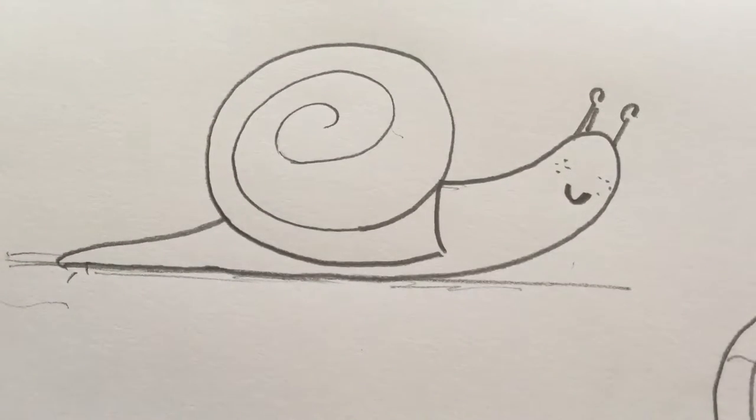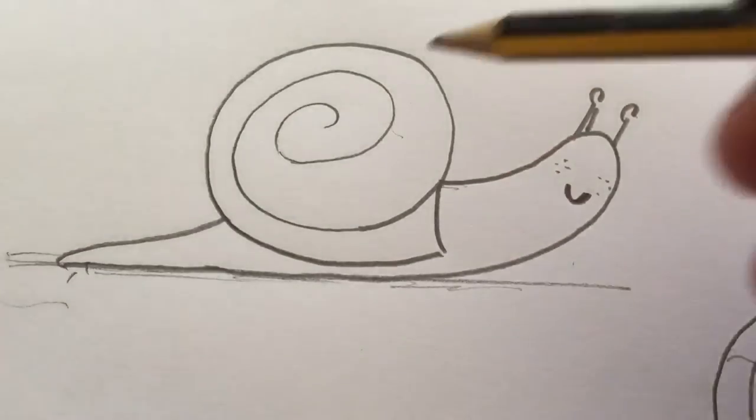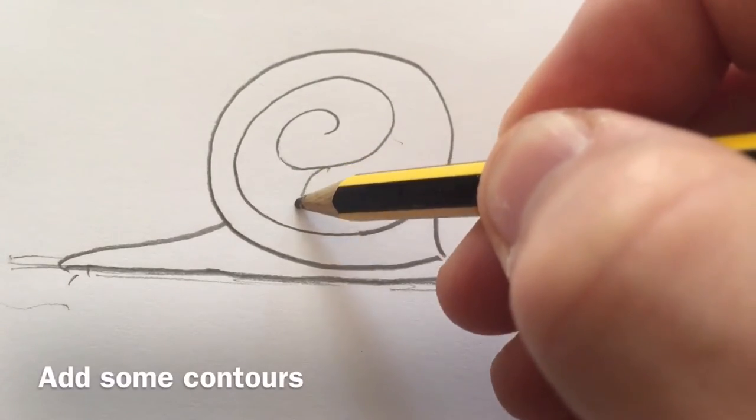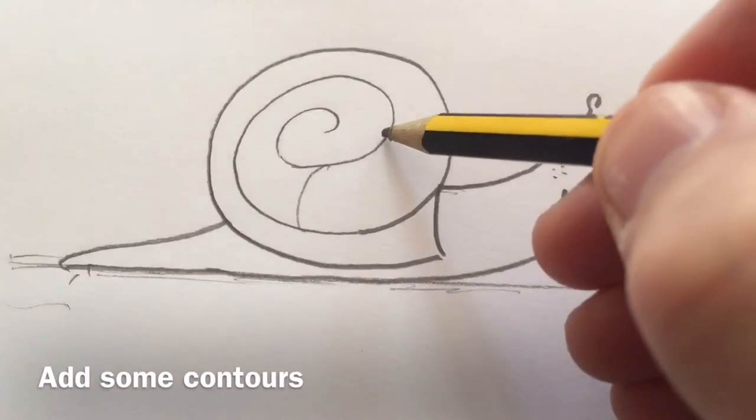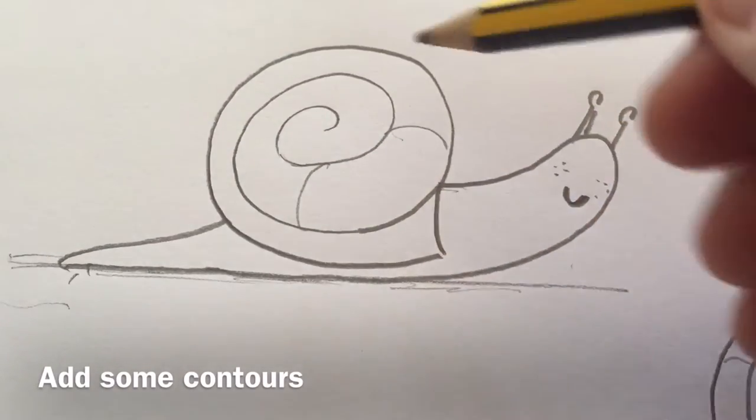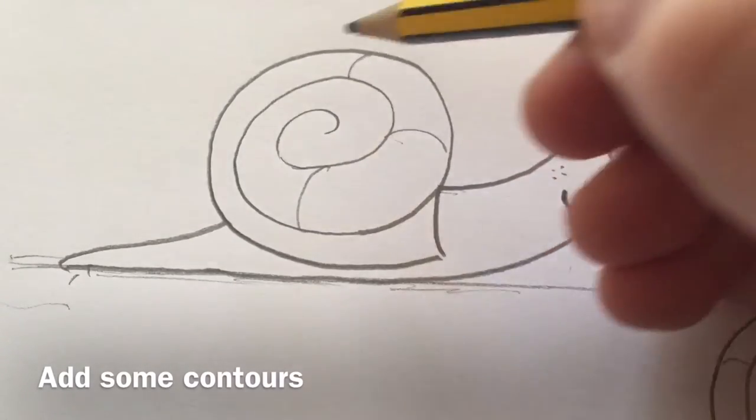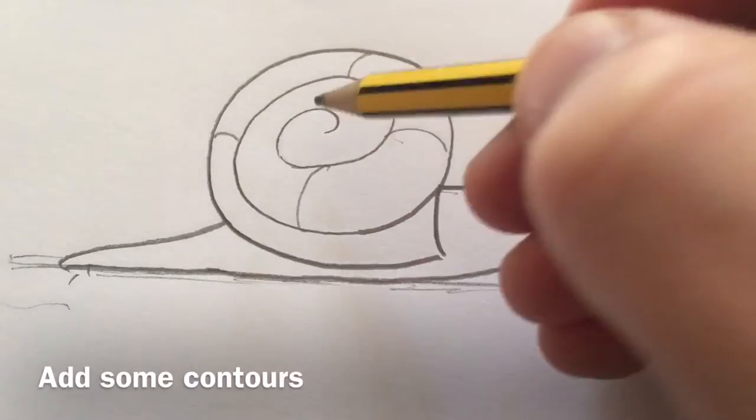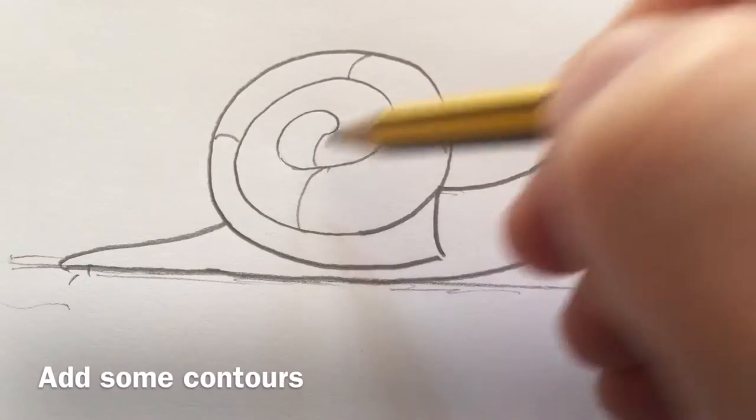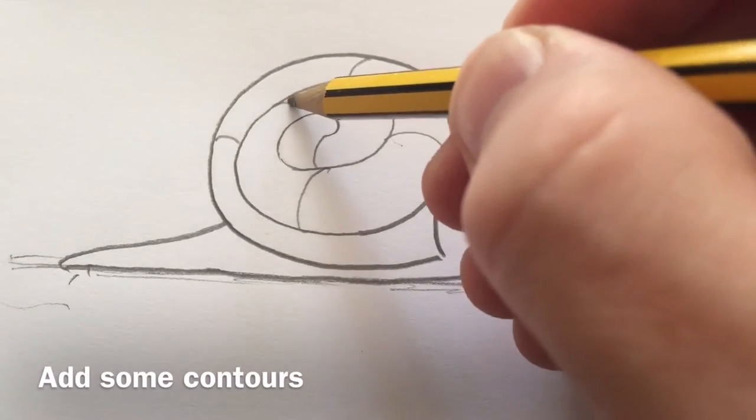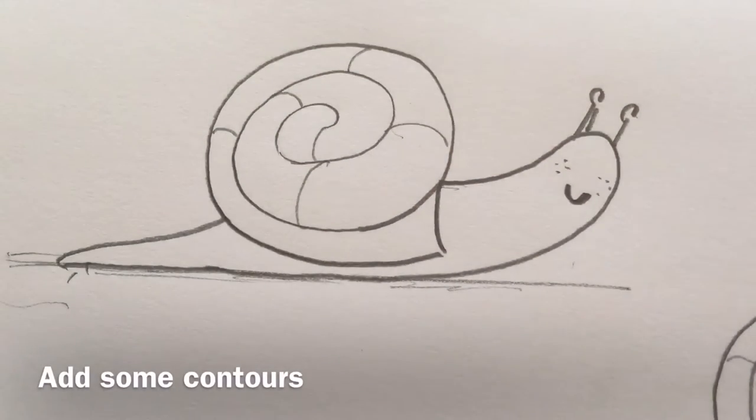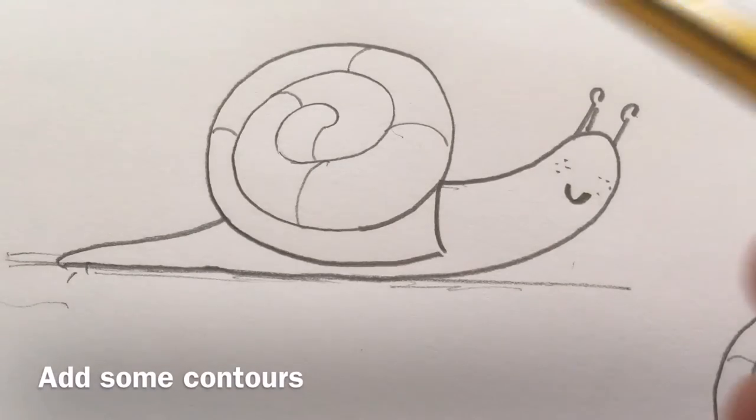And then what we're going to do, you don't have to do this, but this is a good way of just getting a bit of depth to the shell. It's just to add some little rounded lines that follow the contour of the shell. There we go. Like I say, they're not necessarily needed. They just give a little bit of extra depth without actually having to shade anything.